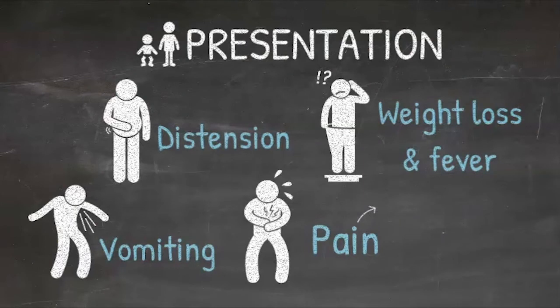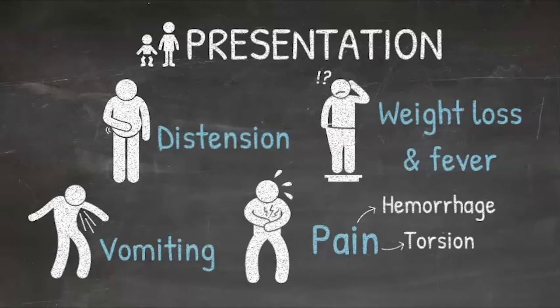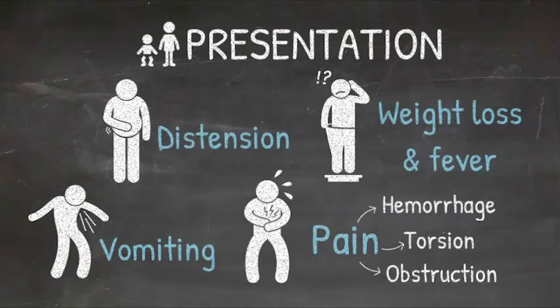That abdominal pain can be related to hemorrhage into the cyst or, less frequently, to intestinal ischemia from torsion of the cyst within the bowel and mesentery. These cysts can also present as an acute or intermittent bowel obstruction.